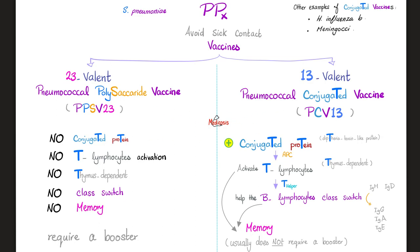What's the difference? The valency is different — PPSV23 covers 23 types of Streptococcus pneumoniae, but PCV13 covers 13. However, the 13-valent one is stronger because it has a conjugated protein on top of the vaccine. When you add a protein, this protein will be carried by the antigen-presenting cell and presented to the T-lymphocyte.